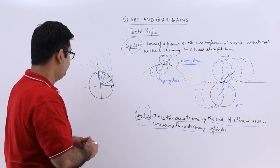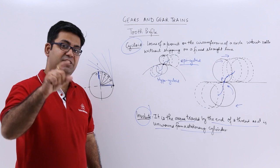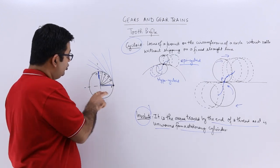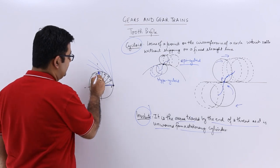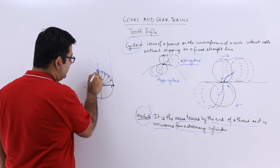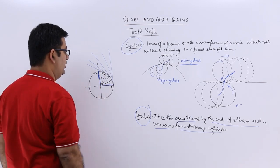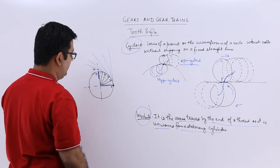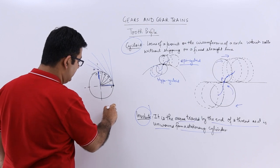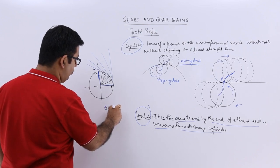Now what I will do? I will start cutting distances equal to O1. So let us say I take this distance O1. Equal to this I cut a distance on the first tangent. So let us say this point over here is point A. So I will write down O1 is equal to 1A.